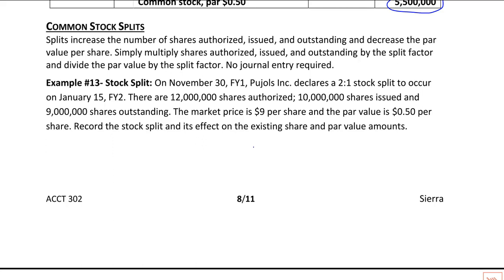The stock split is a very frequent transaction across companies. You'll see splits for a company like Apple, Google, or Microsoft happen from time to time. Now for common stock splits, there's no journal entry. In this example, Pools Incorporated declares a two-for-one split. It will affect authorized, issued, and outstanding shares.